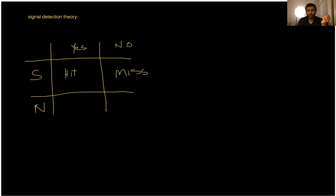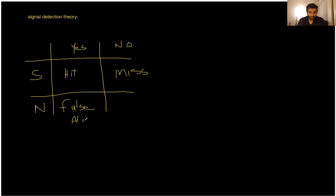Now when we're talking about noise — in a situation where there is actually no signal and we think we heard a signal and say yes, this is going to be a false alarm. And then if there is no signal and you correctly say there is no signal, then this is going to be a correct rejection. I'll put CR for correct rejection — you rejected something that wasn't there, so it's correct rejection.